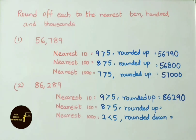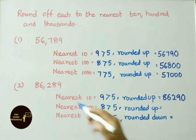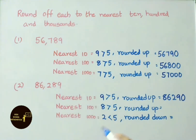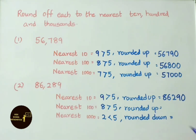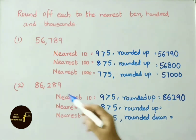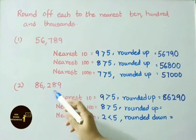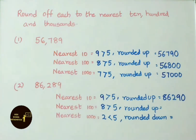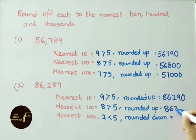Nearest 100 for 86,289: the digit to the right of the 100s place is 8. Since 8 is greater than 5, we round up. That means 200 becomes 300, and 89 becomes 00. So the answer is 86,300.